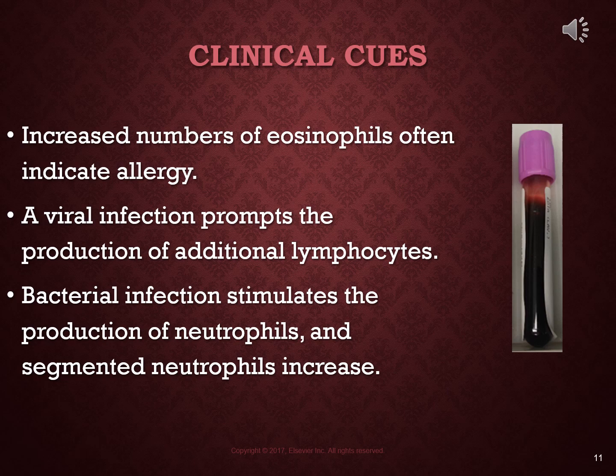A few things to keep in mind regarding the differential: an increased number of eosinophils in your diff often indicates an allergic response, since eosinophils are the white blood cells involved in allergy. Viral infections prompt the production of more lymphocytes, so when you have more lymphs in your diff, the possibility of a viral infection exists. Bacterial infections stimulate the production of neutrophils, so neutrophils and segmented neutrophils — called segs — will be increased in the differential.